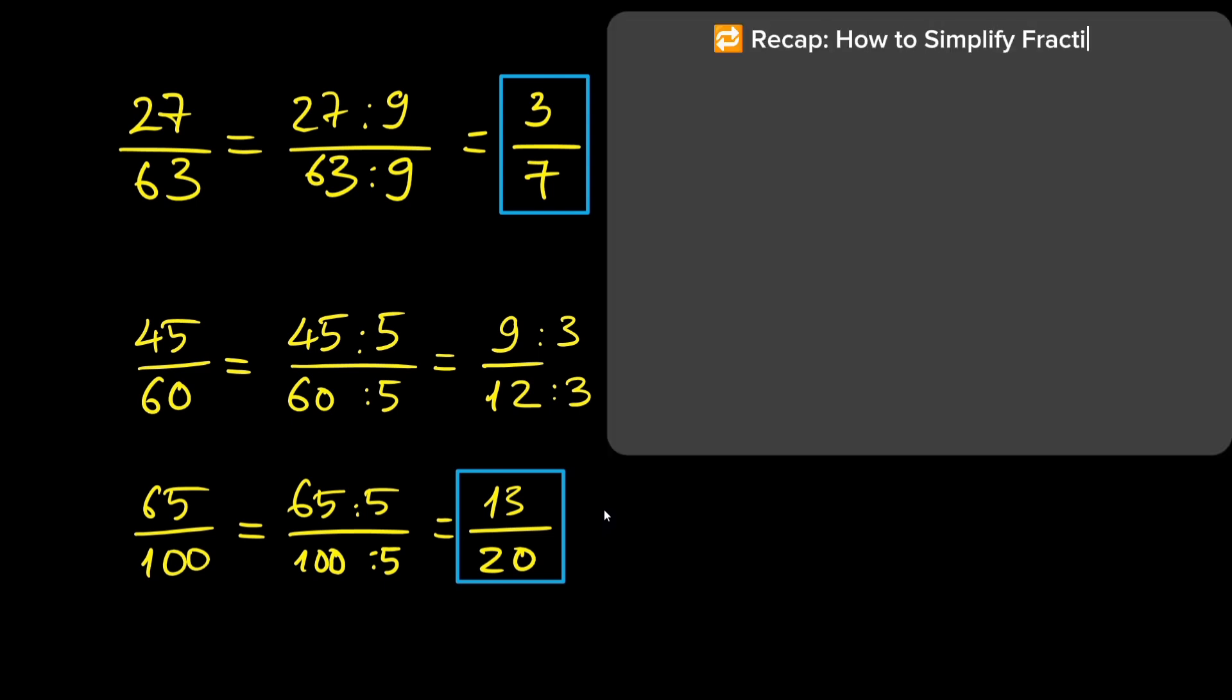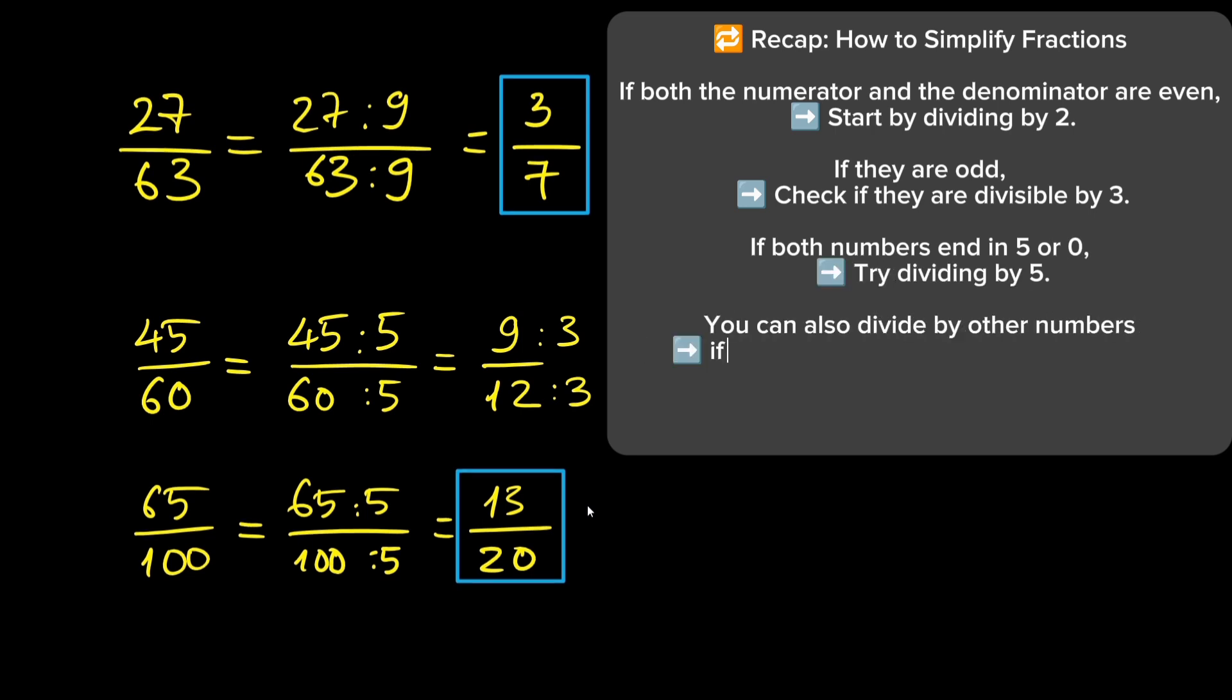To recap: if both the numerator and the denominator are even, start by dividing by 2. If they are odd, check if they are divisible by 3. If both numbers end in 5 or 0, try dividing by 5. You can also divide by other numbers if you know your multiplication tables well, but for most problems dividing by these numbers is quite common.